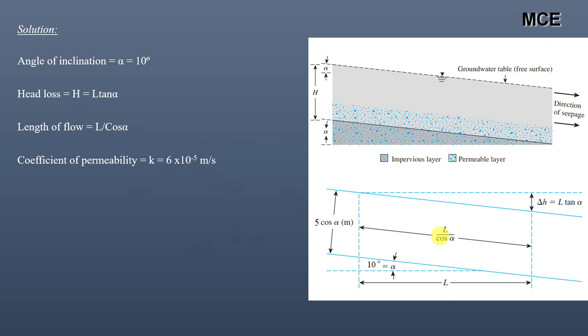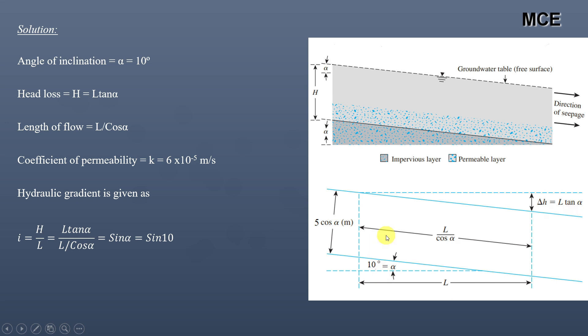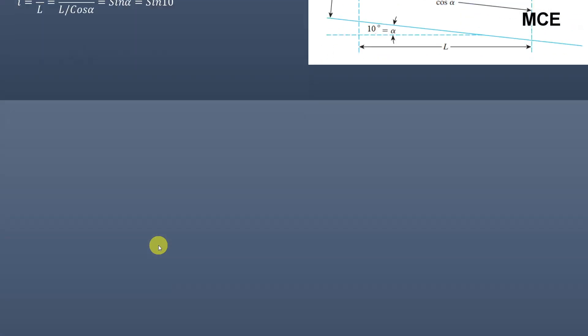The coefficient of permeability is given as 6 × 10⁻⁵ m/s. The hydraulic gradient is the ratio of head loss to length of flow. Head loss is L·tan(α) and the inclined length of flow is L/cos(α), so the hydraulic gradient equals sin(α). With α = 10°, the hydraulic gradient equals sin(10°).